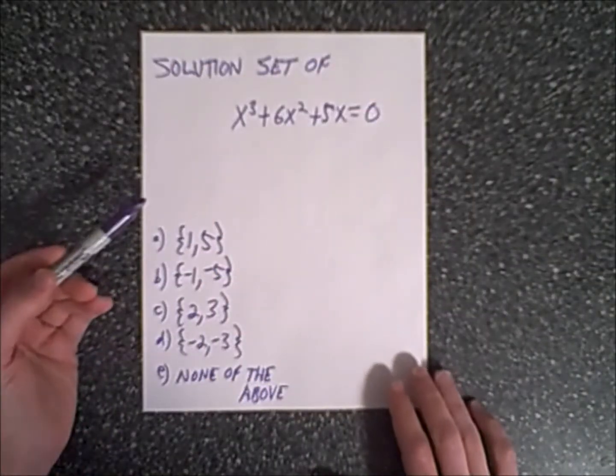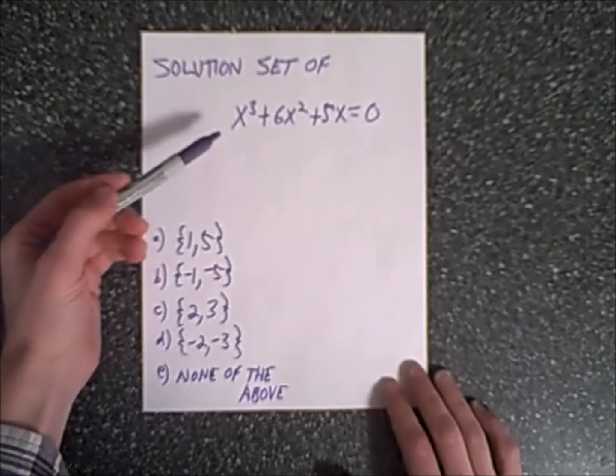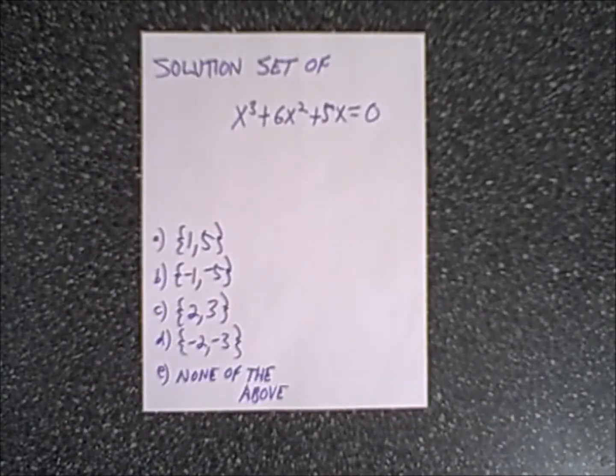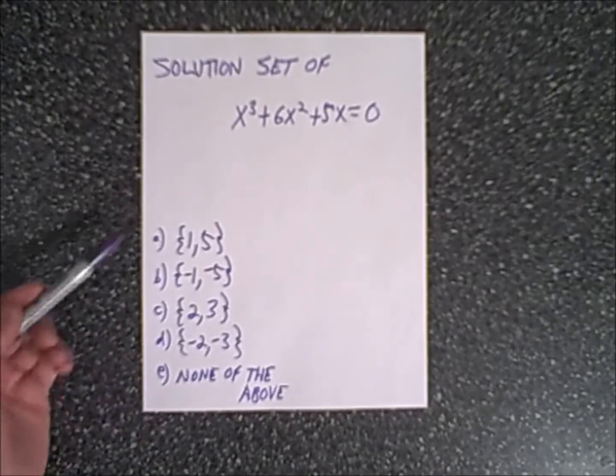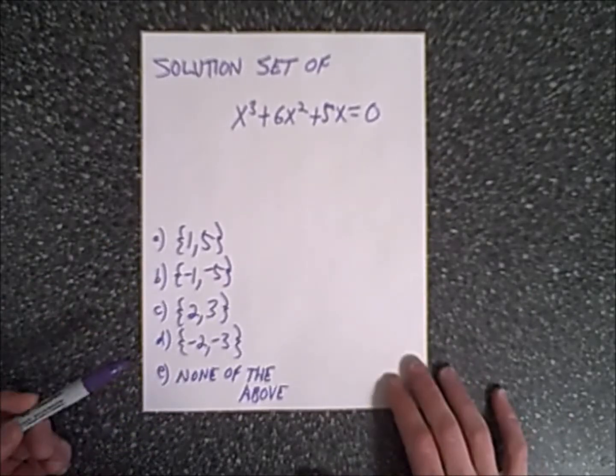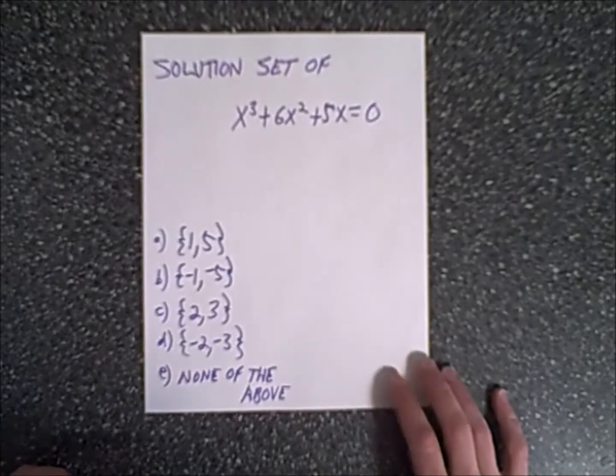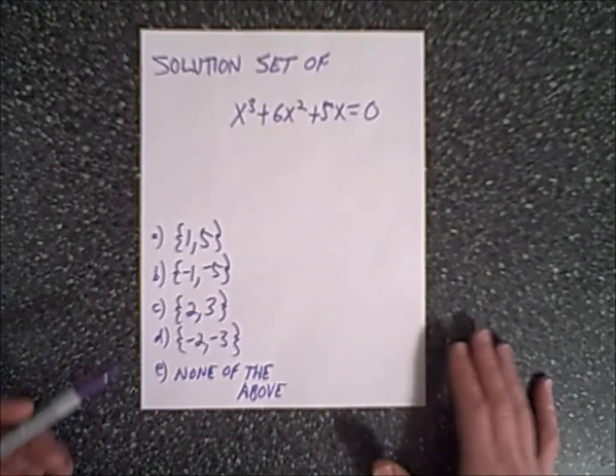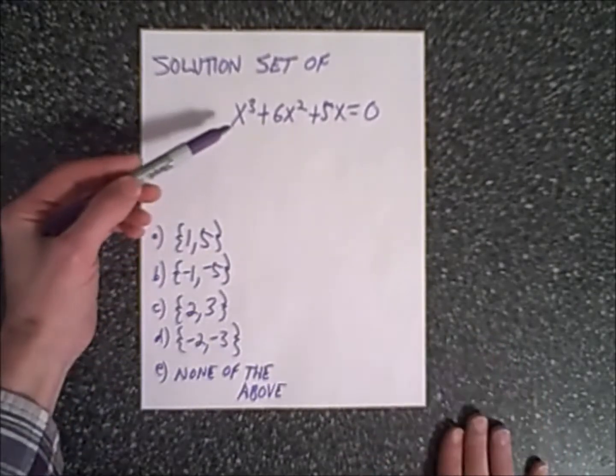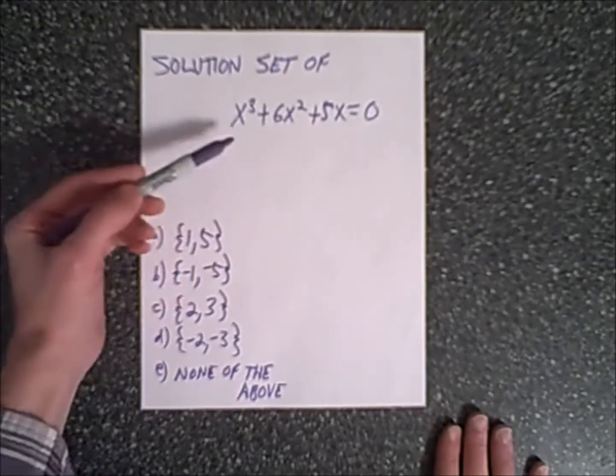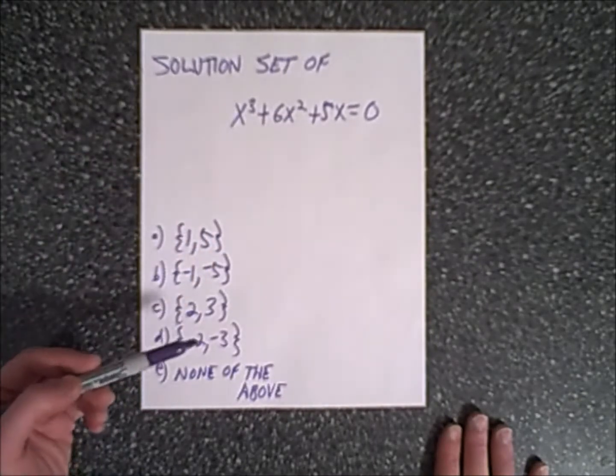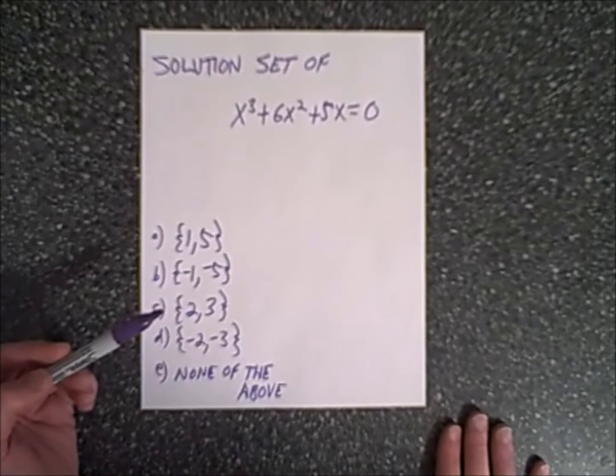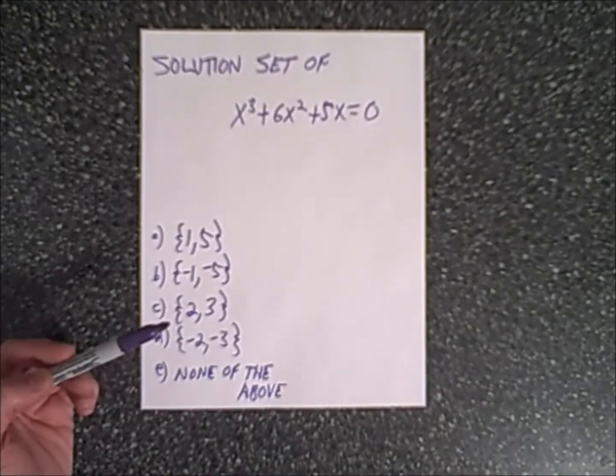In this question, we have an equation set equal to zero. Find the solution set for x cubed plus six x squared plus five x equals zero. If you actually look at this, you'll notice you have four solutions and none of the above. What we're going to discover, actually, is the answer is none of the above. How do we know that? Let's take a look at the lead term. The degree of this polynomial is three, which means, according to the fundamental theorem of algebra, we should have three solutions. We're going to solve this and find our solution set, which should have three answers.